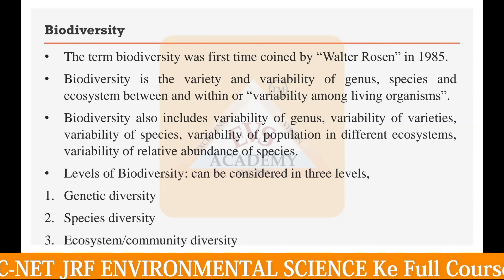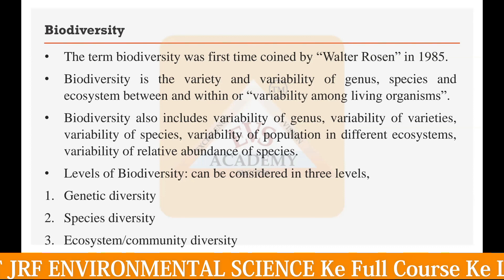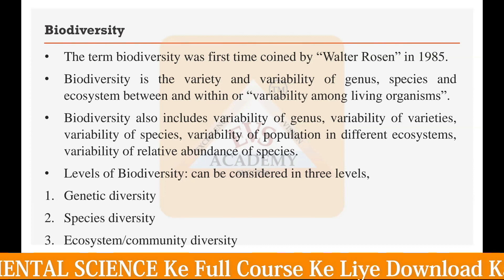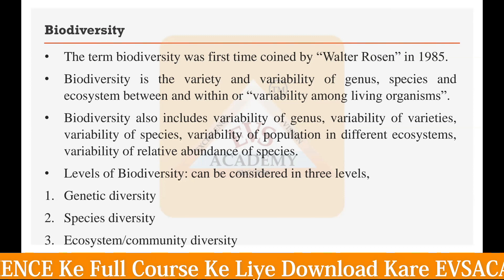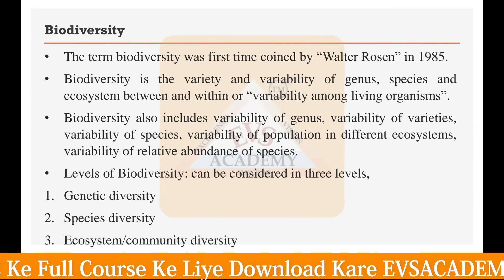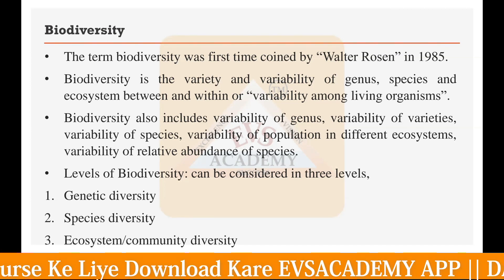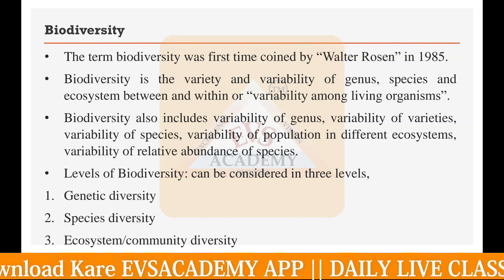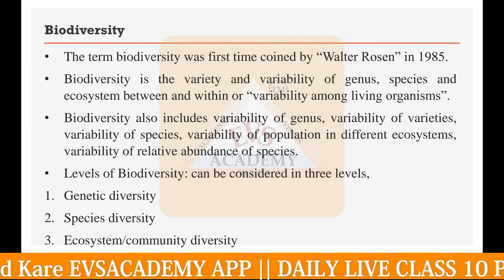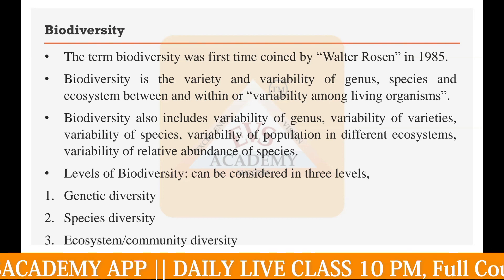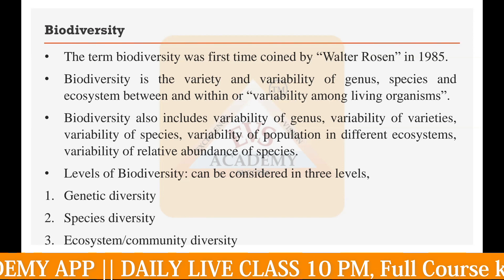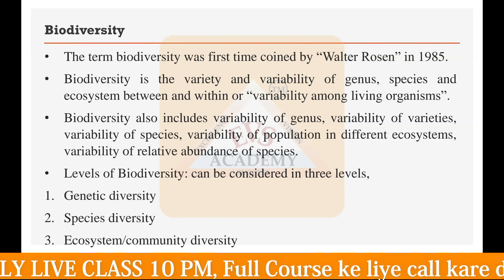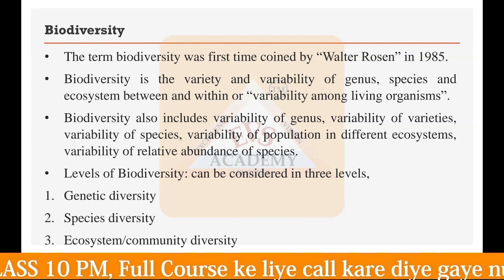If I give you the example of the desert — for example, the Sahara Desert or maybe the Thar Desert of India — if you take a unit area, then obviously you will get a very lesser number of organisms due to the harsh climatic conditions, as well as a very lesser number of species. So biodiversity simply means a higher number of species and higher number of organisms.